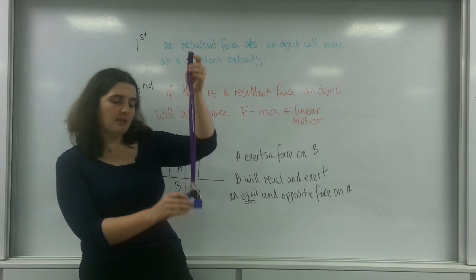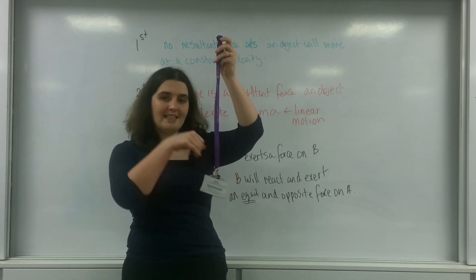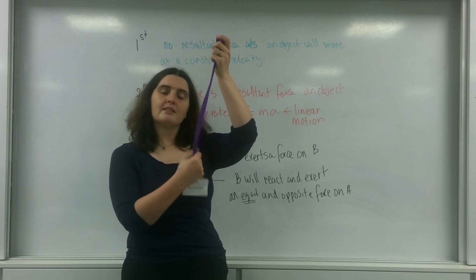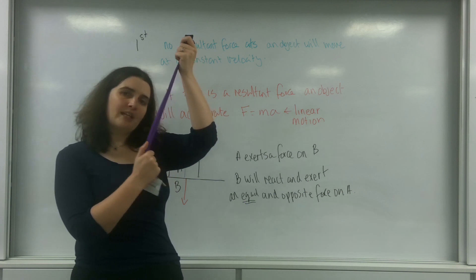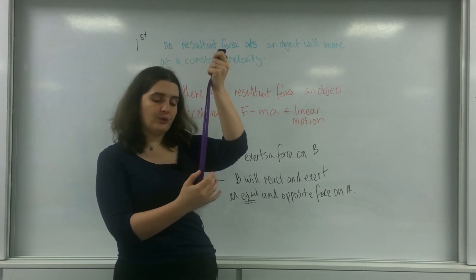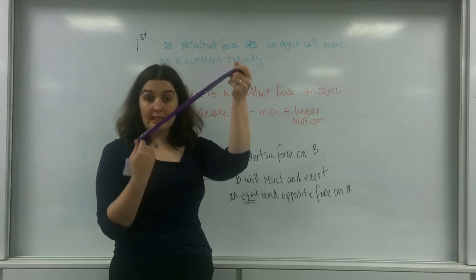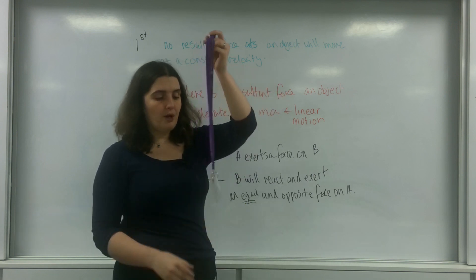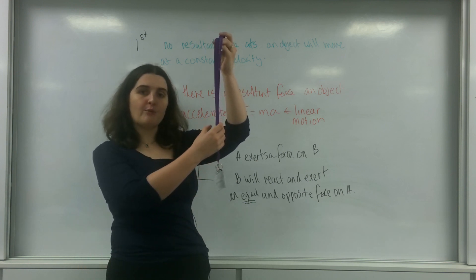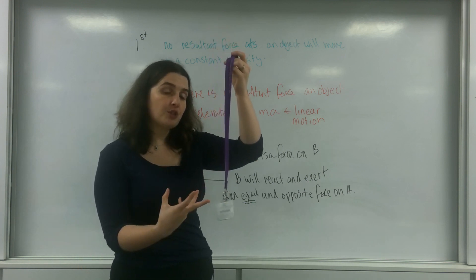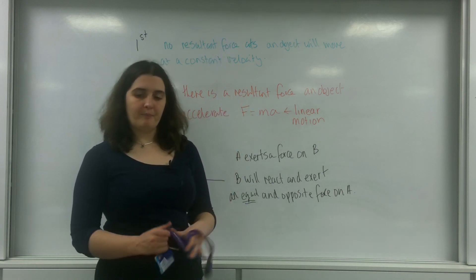So this lanyard, this ID card here, exerts weight downwards on this piece of string. So this piece of string will exert an equal and opposite force on this object. And that is what you see with the tension in the rope. And this is why this string does not fall any further down, because the tension in the rope, which is a reaction force from the weight going down, will act upon it.